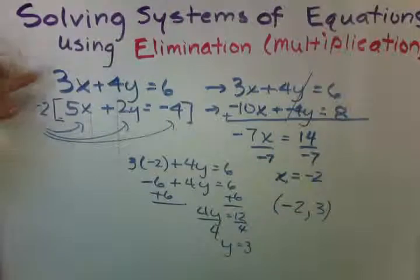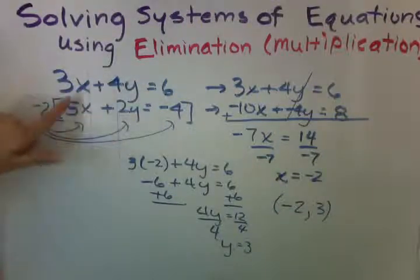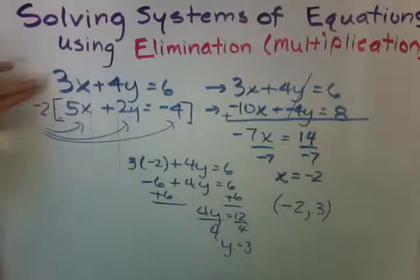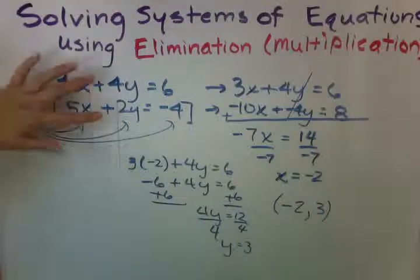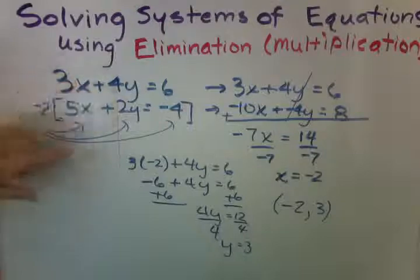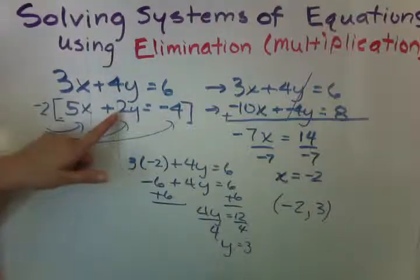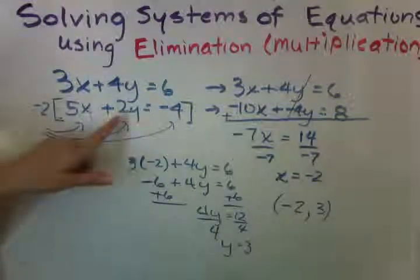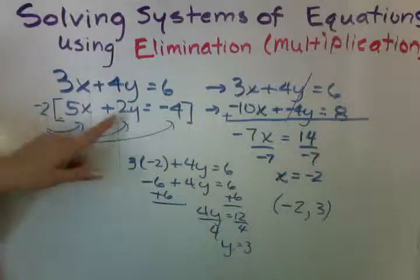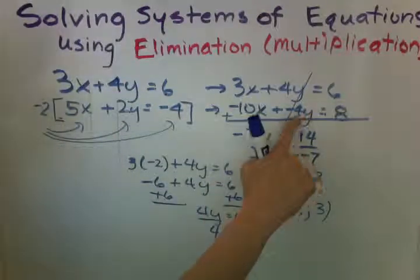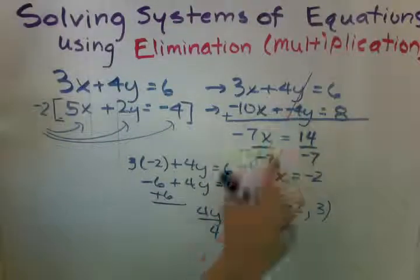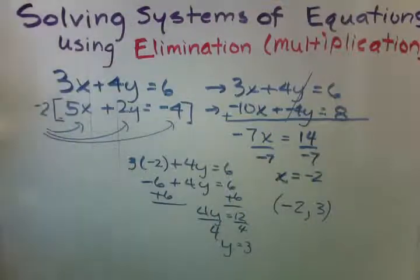So let's review. In order to cancel out one of these variables, we have to make them the opposite. 3 and 5 cannot cancel out. 4 and 2 cannot cancel out. So I've decided to go ahead and multiply this entire equation by negative 2 in order to make it into a negative 4y here, so that we can eliminate. And then the rest is just a one-step, two-step equation.